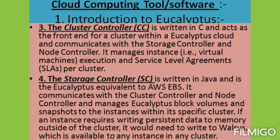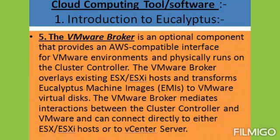Walrus is also called WS3, which means Web Storage Services, and is the storage service provided by Eucalyptus software. It is the Eucalyptus equivalent to AWS Simple Storage Service, written in Java. Walrus offers persistent storage to all virtual machines in the Eucalyptus software and can be used as a simple HTTP PUT or GET storage-as-a-service solution. There are no data type restrictions for Walrus; it can contain images, volume snapshots, and application data, and only one Walrus can exist per cloud.